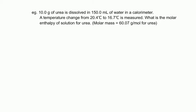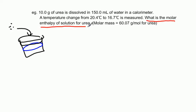The most important thing to setting up a calorimetry problem is to make sure that we've identified what is our system and what is our surroundings. So if we take a look at this example here, it says we've got 10 grams of urea. Urea is just a salt. We're gonna take it and we're gonna dissolve it in some water inside a calorimeter, a nice little coffee cup. And when we dissolve 10 grams of urea in the water, we observe a temperature change from 20.4 degrees Celsius to 16.7 degrees Celsius.